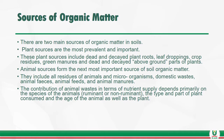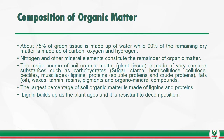Animal sources form the next most important source of soil organic matter. They include all residues of animals and microorganisms, domestic wastes, animal feeds, and animal manure. The contribution of animal waste in terms of nutrient supply depends primarily on the species of the animal, whether ruminant or non-ruminant, the type and part of plants consumed, and the age of the animal.